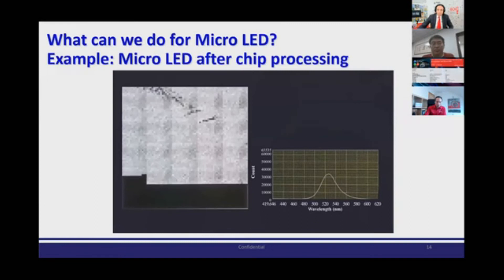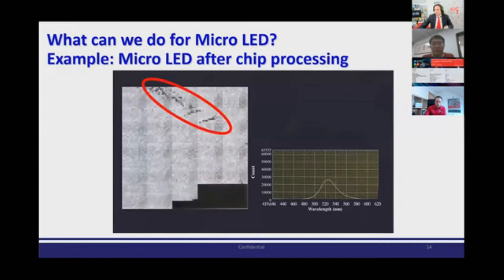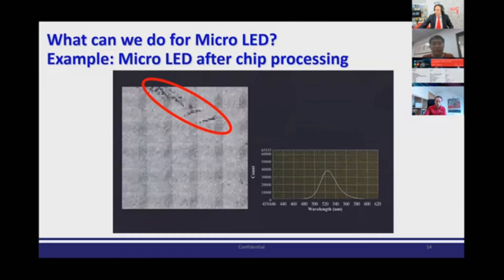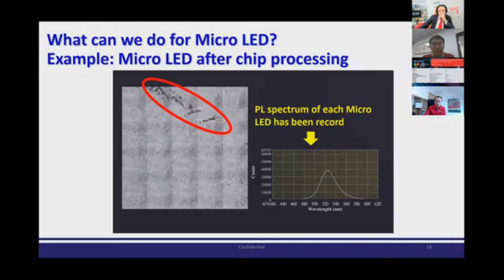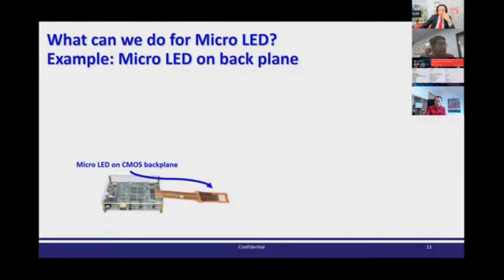Here is a video of our measurement process. Every point in the image is a PL spectrum of one micro LED, so you can easily identify defects. If you really want to know why a particular micro LED is bad, every micro LED spectrum is recorded, giving you a complete database of every micro LED on your wafer.